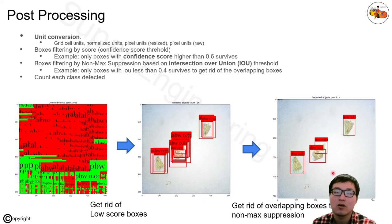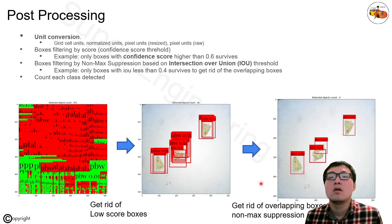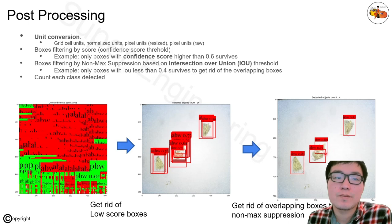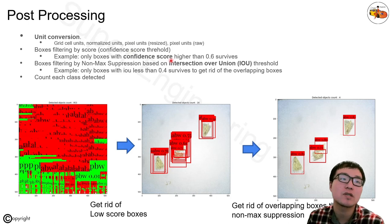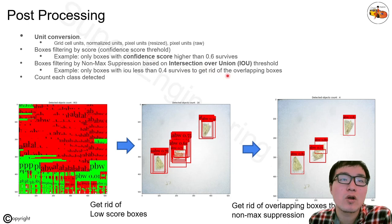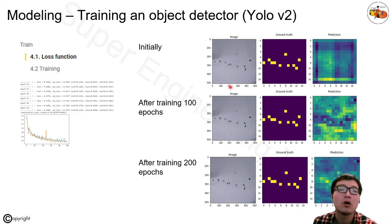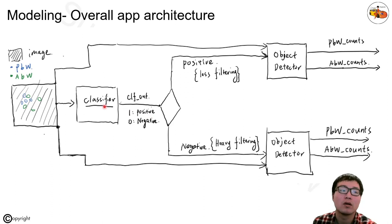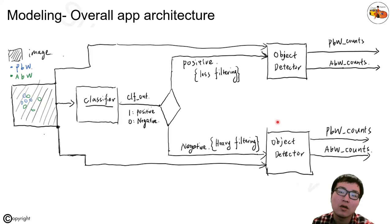NMS picks the best-scoring box (e.g., 0.82), removes all highly-overlapping boxes, then picks the next best (e.g., 0.81), removes its overlapping boxes, and so on. The overlap threshold is measured by Intersection over Union. There are two thresholds to set for filtering. This connects to the overall pipeline: if the classifier predicts a positive image, we apply lighter filtering; if it predicts a negative image, we apply heavier filtering based on the classifier's confidence percentage, resulting in fewer counts.